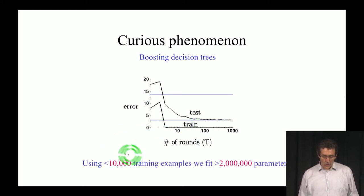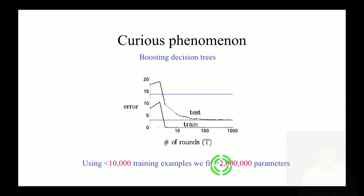What this means at a high level is that we're using just about 10,000 training examples, and we're fitting these 1,000 trees that together have about 2 million parameters. How can you ever fit 2 million parameters using just 10,000 examples? What you expect is that the curse of dimensionality will completely destroy your predictive ability. But that doesn't happen.